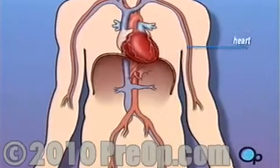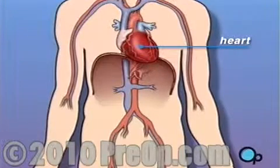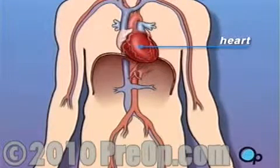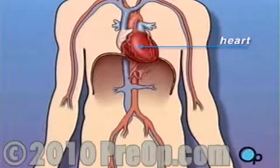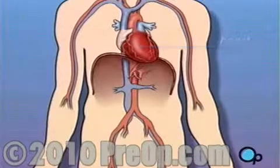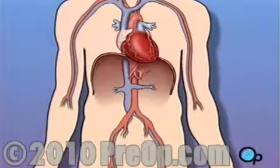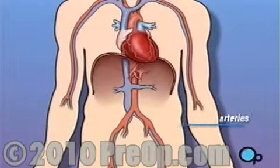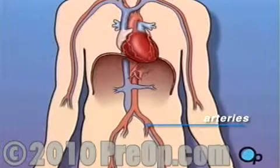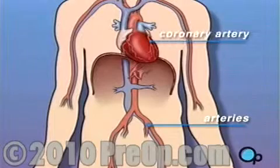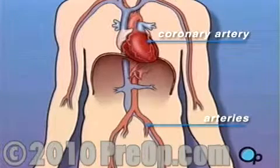The heart is located in the center of the chest. Its job is to keep blood continually circulating throughout the body. The blood vessels that supply the body with oxygen-rich blood are called arteries. The arteries that supply blood to the heart muscle itself are called coronary arteries.